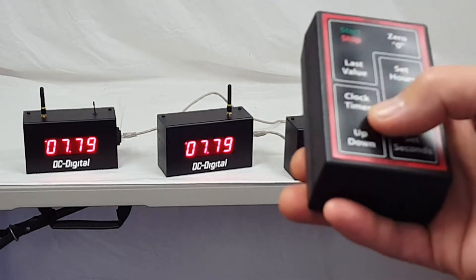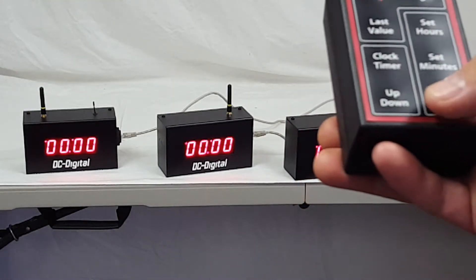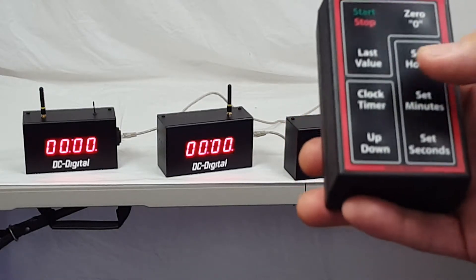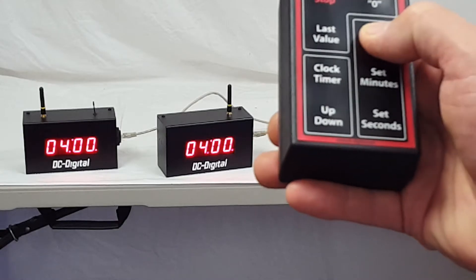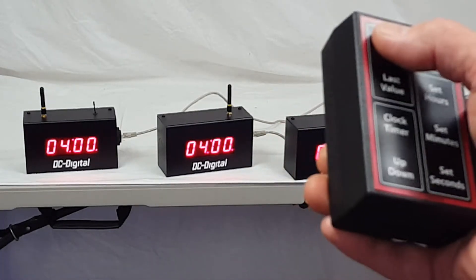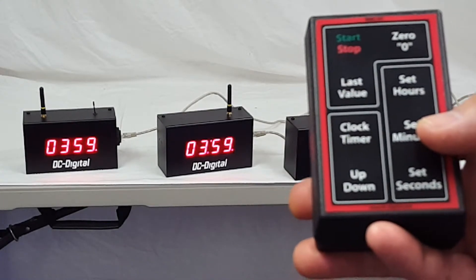Hit stop, zero it, and I'm going to shift it to countdown mode. I'm going to set it for hours. We're going to set it for three hours. Well, I missed it. I'm going to set it for four hours. I'm going to start it, and as you can see, the colon's flashing, indicating that it's running.